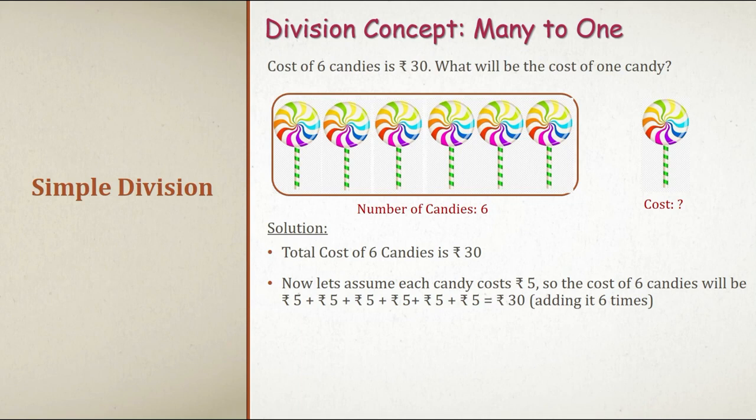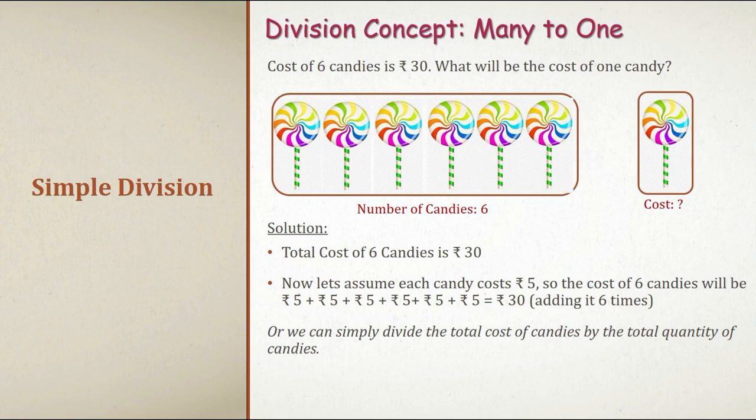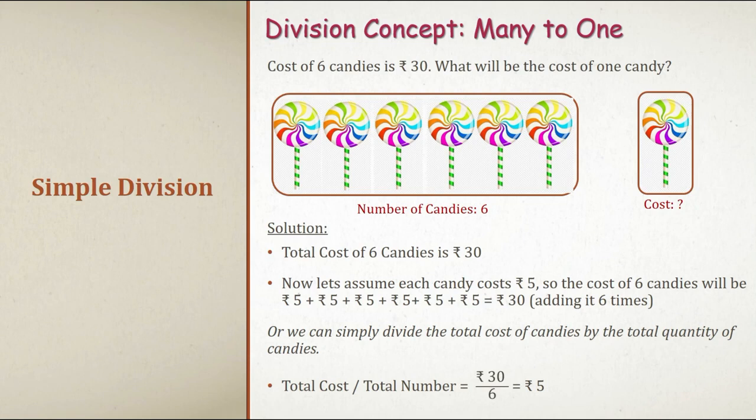The opposite of this is simple division which is the concept of many to one. It is when we know the unit of many and we need to find the unit of one. Example: cost of six candies is rupees 30. What will be the cost of one candy?